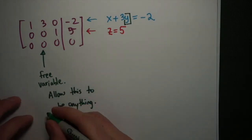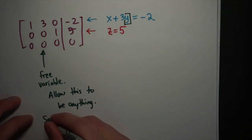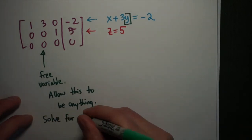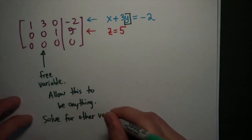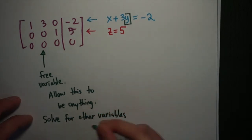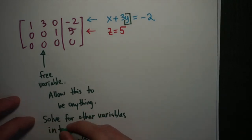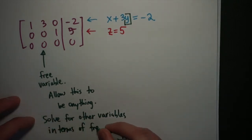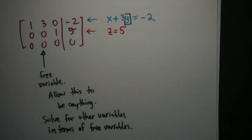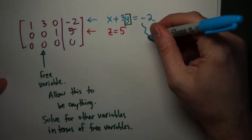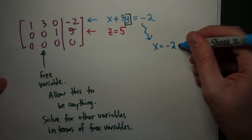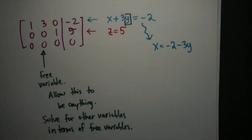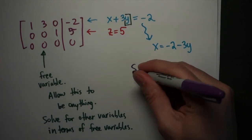I'm going to allow y to be anything that I want it to be, hence the word free. This will give us a way of generating all of the solutions. If I pick y to be 1 or y to be 7, I'm going to get a solution for each of those choices of y. Once I know which variable I'm choosing to be free, I solve all of the other variables in terms of the free variables. So I'm going to rewrite the solution so that it looks slightly different. I get x equals negative 2 minus 3y.